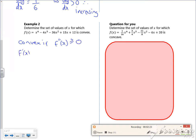So if I differentiate it, I've got 4x cubed minus 12x squared minus 72x. If I differentiate it again, I've got 12x squared minus 24x minus 72.